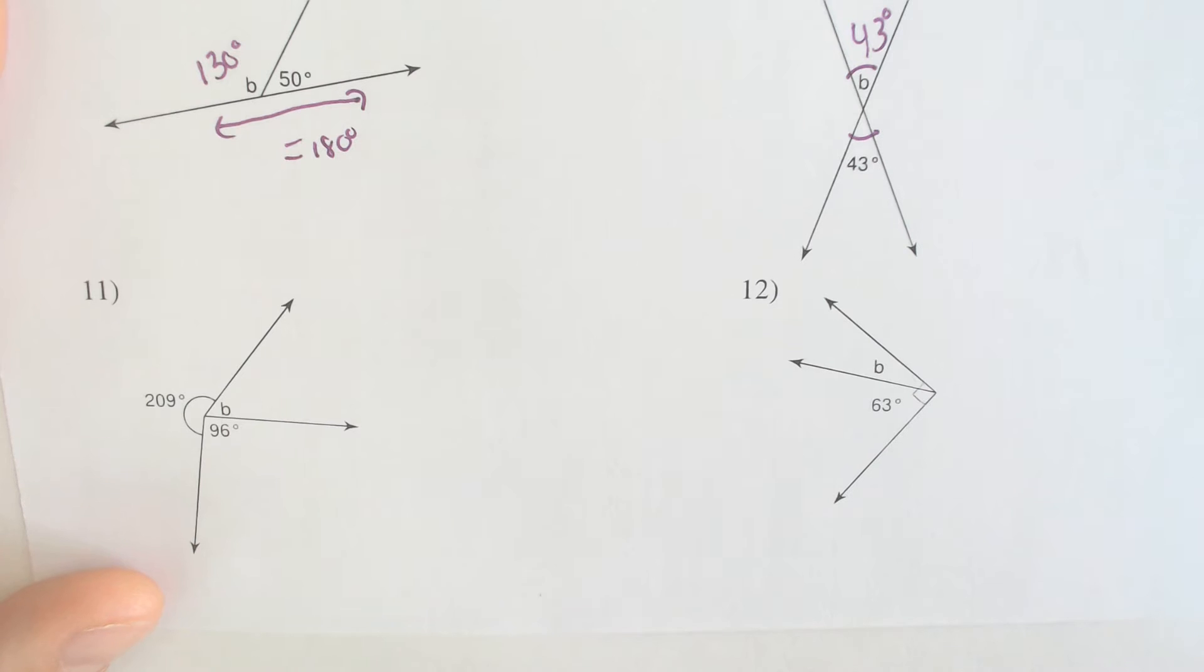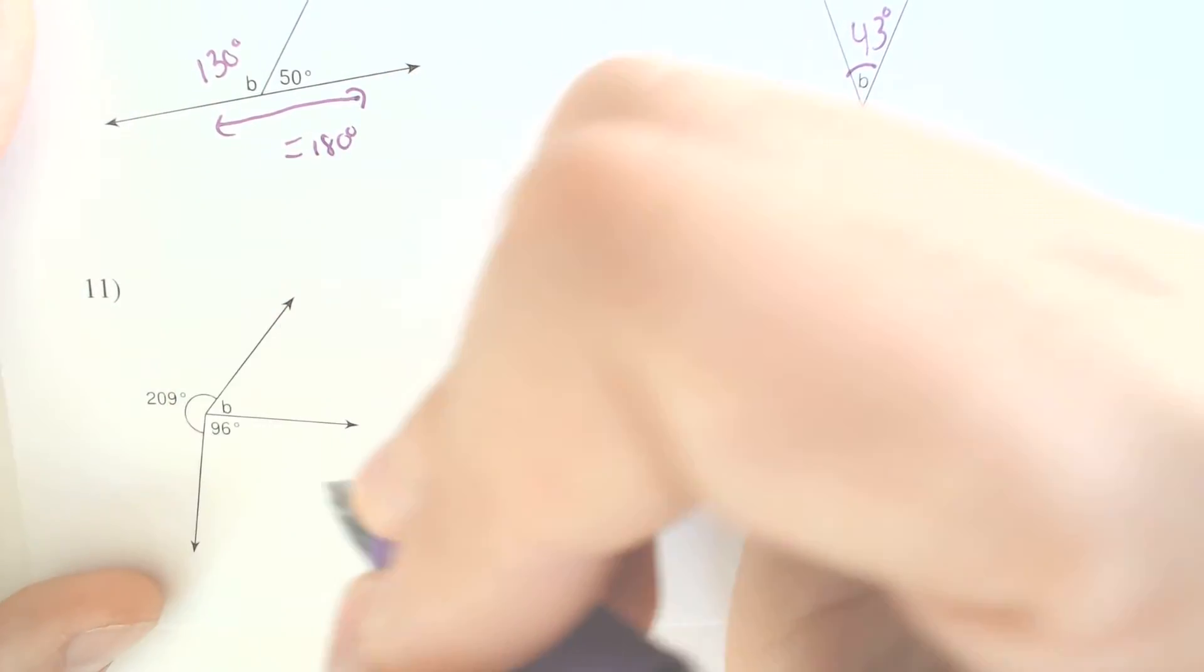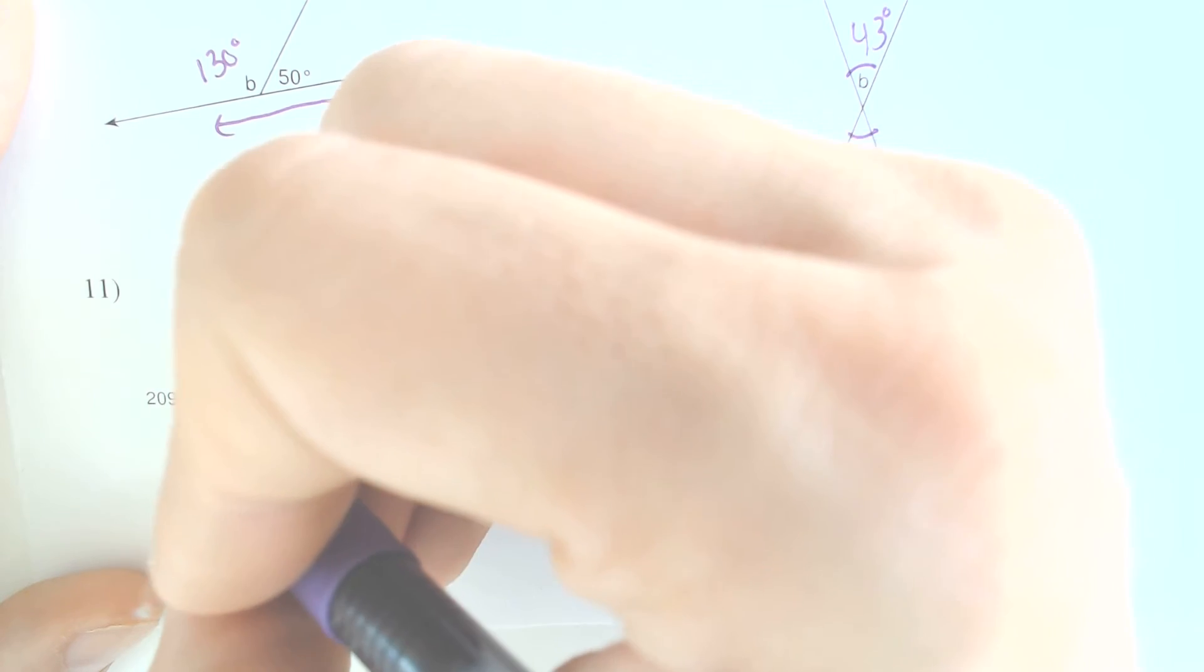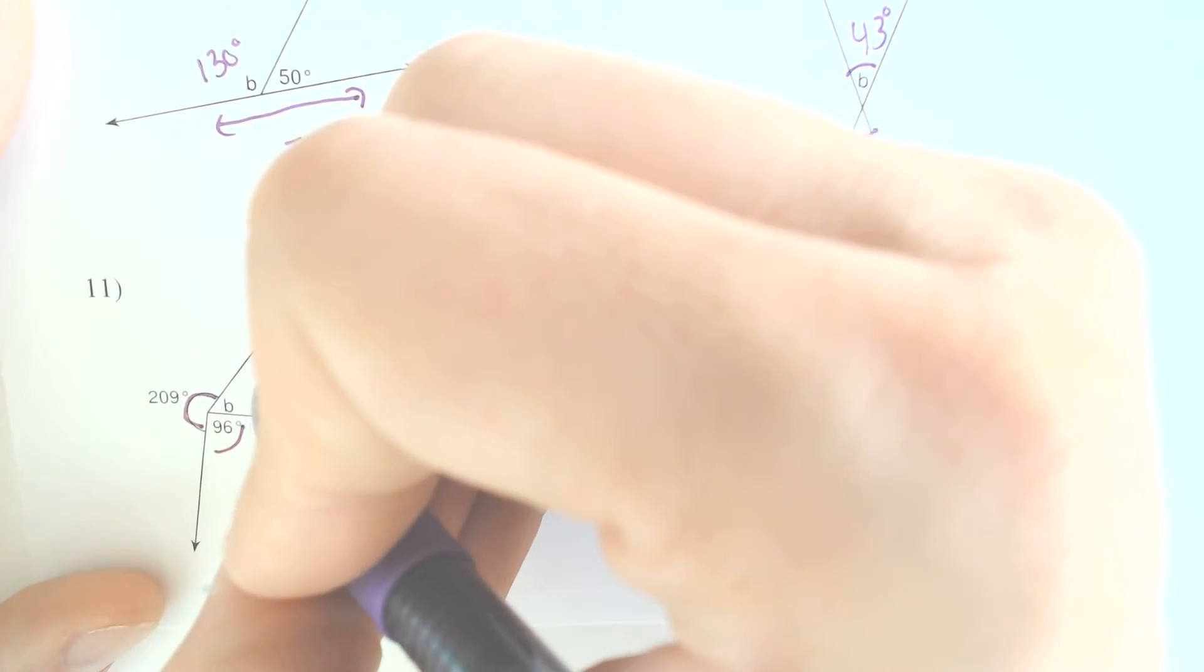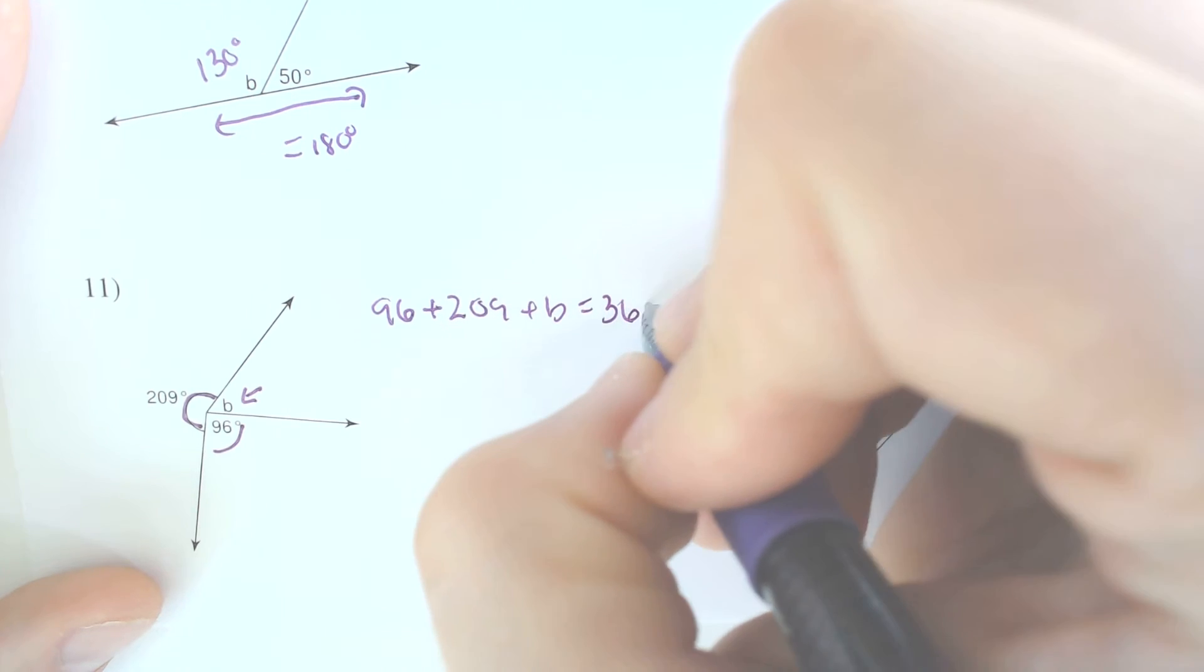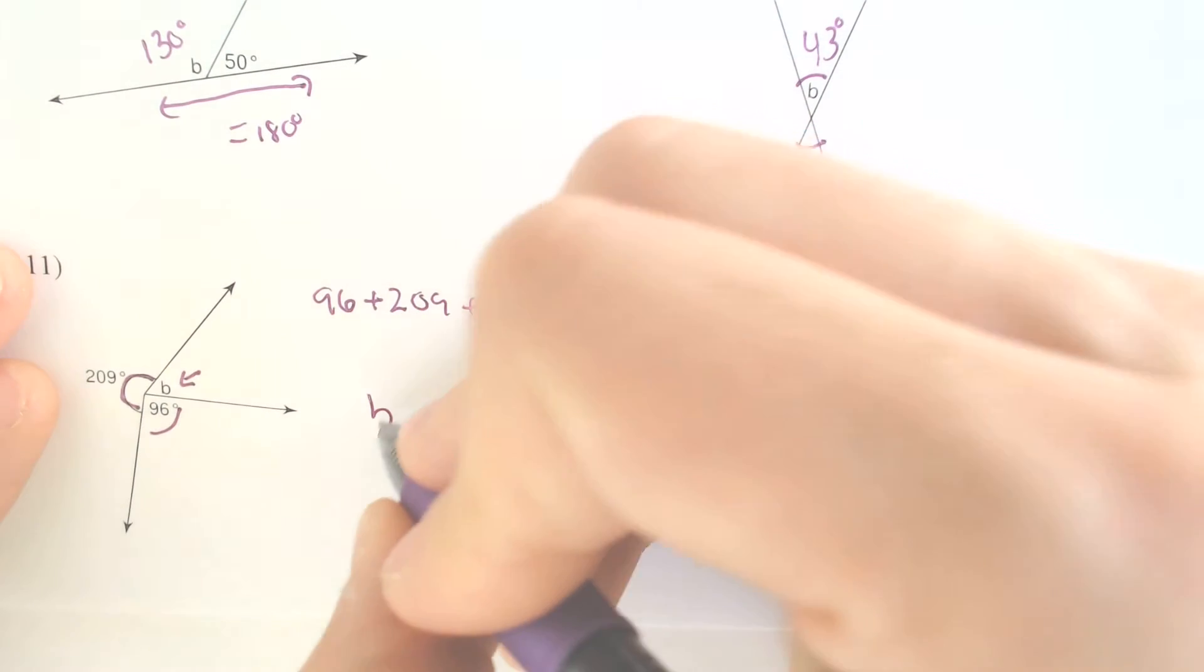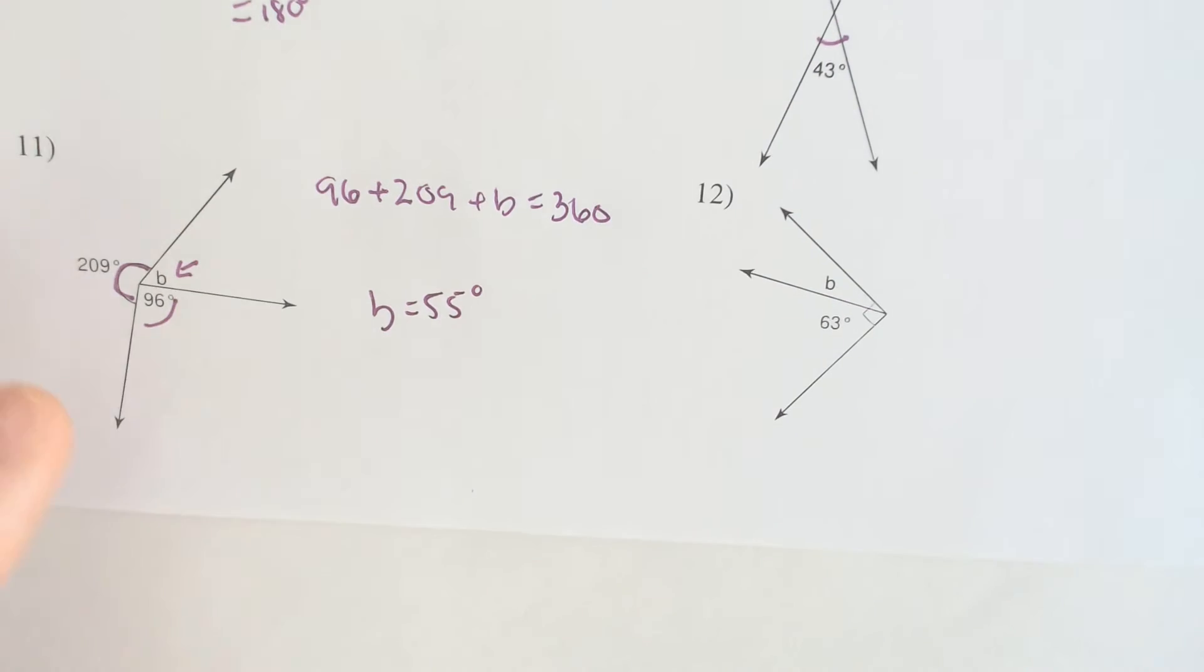11, this one takes it up another notch. You have to know not only what angle B is, but in order to know what it is you have to understand that all the way around a circle is 360 degrees. So if we have 209 here and 96 there, how much is left over out of the 360? Well, you could be like 96 plus 209 plus B has to equal 360. If you want to do it algebraically, you could also just subtract those two numbers from 360 minus 96 minus 209. And you would end up with angle B equaling 55 degrees.